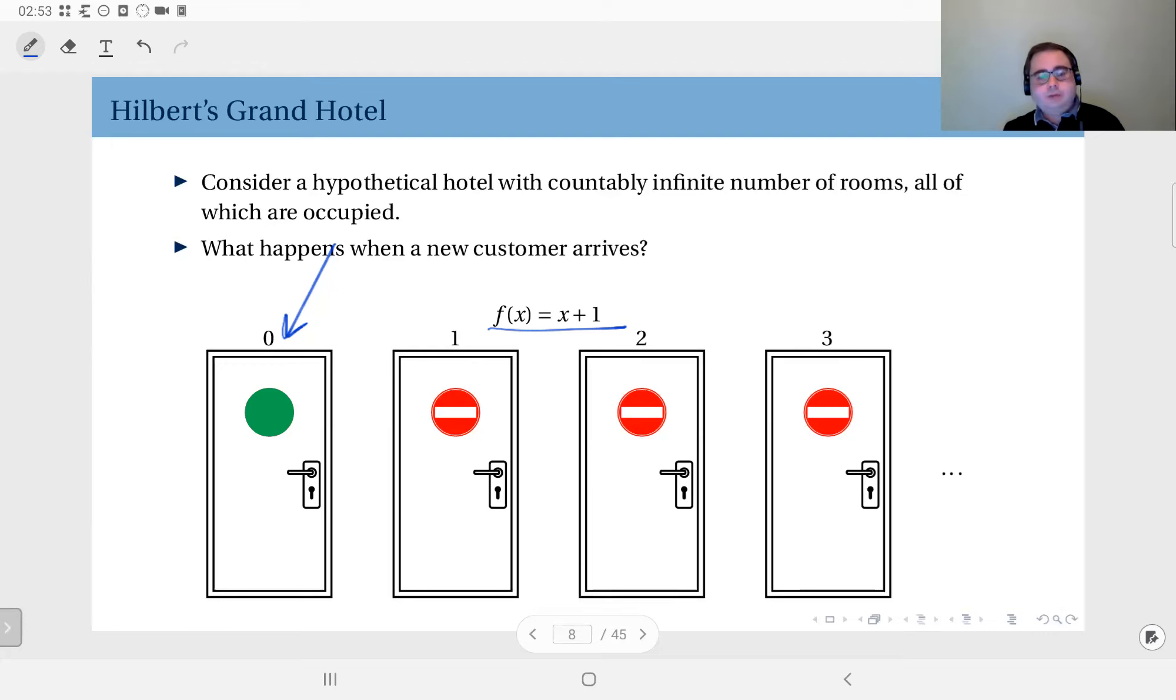Now, in fact, you can generalize this. So, let's say two customers arrive, 10 customers arrive, a million customers arrive. You can modify this function. X plus 1 million is going to give you 1 million new vacant rooms so you can accommodate 1 million new customers. It's an infinite hotel so you cannot run out of rooms in that way. As long as a finite number of customers arrive, you can accommodate them.